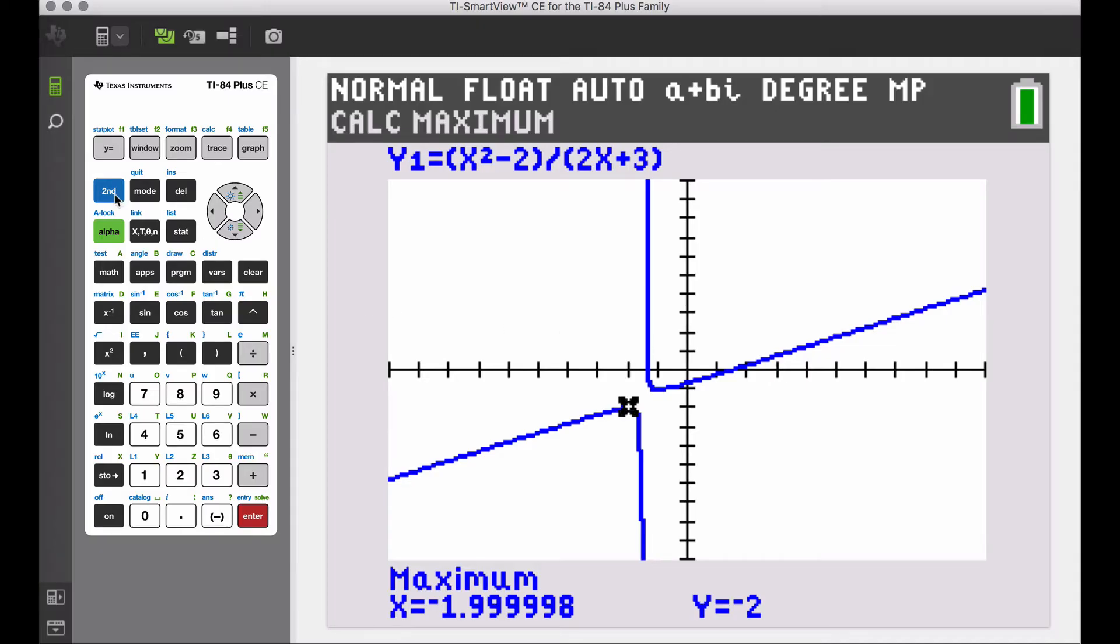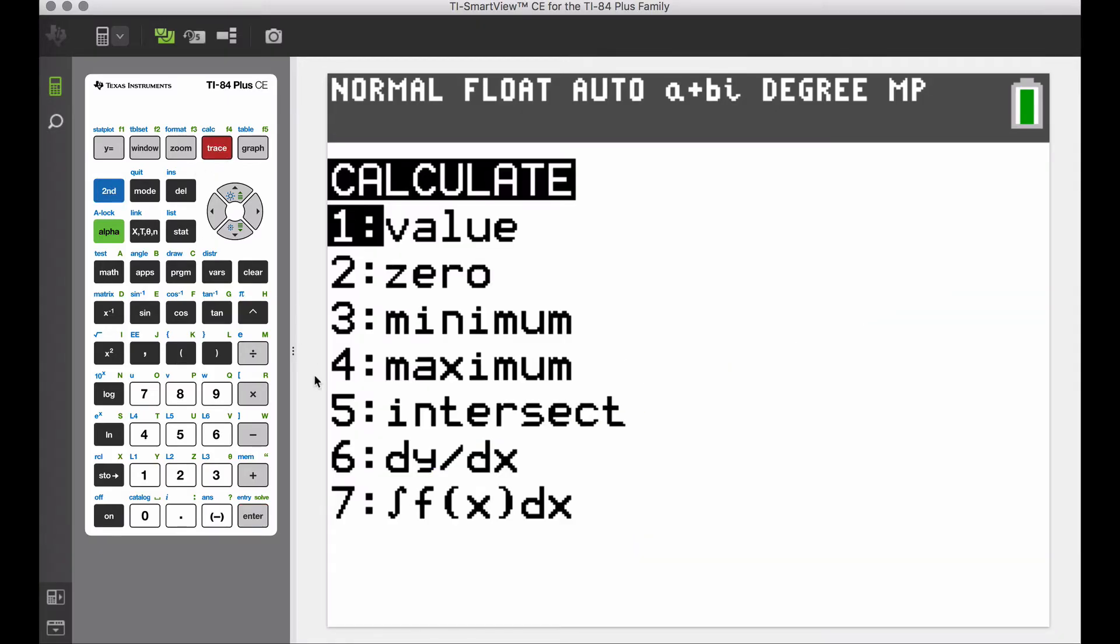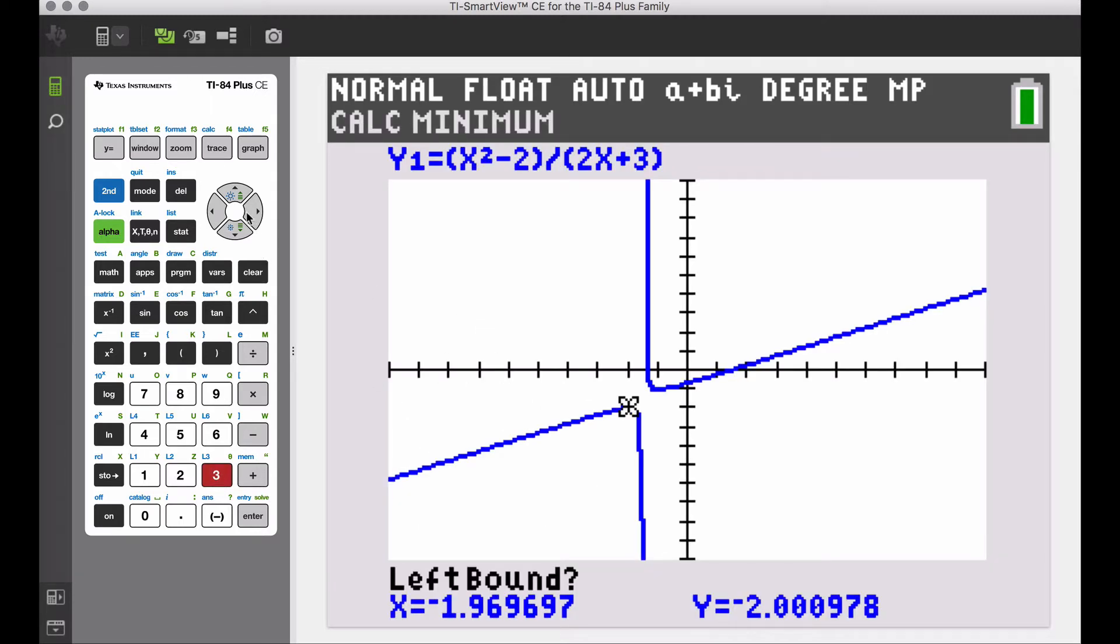So let's repeat this process to find our minimum, second trace, go to min, number 3, and now we want to pick a left bound. So somewhere over here, but I don't want to go back over here into this spot. This right here is fine for a left bound, it is to the left of that low point on the curve. I'm going to press enter, somewhere to the right, I'm going to press enter again, and then enter one more time. And now notice our minimum is at negative 1, negative 1.